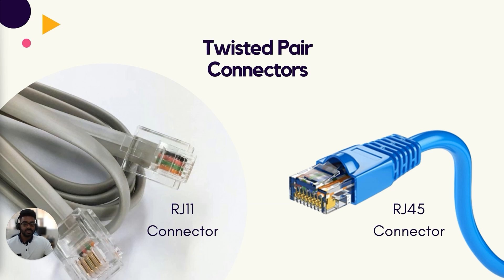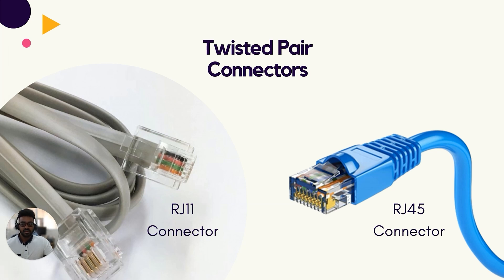Another weakness with twisted pair cable has to do with security. Twisted pair cables emit a small amount of EMI, and this EMI can be picked up by special devices and used to eavesdrop on communications.